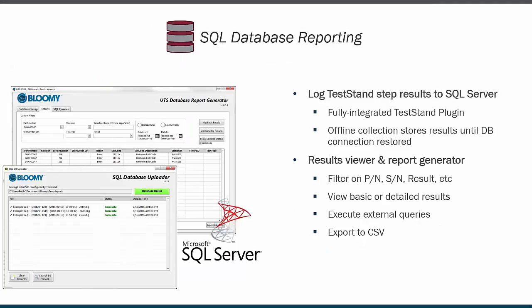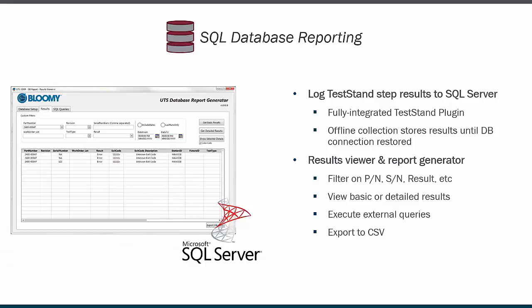The SQL Database Reporting Tool is an integrated result processing plugin for Test Stand, coupled with a report generator. It automatically logs all pass, fail, and measurement data to a simplified SQL database. By storing results to a file and then automatically uploading when the database is available, the offline collection ability allows tests to continue even when the database goes down. The report generator allows results to be queried using combinations of parameters, including part number, serial number, lot, date, and result. Results can also be exported to a CSV file.